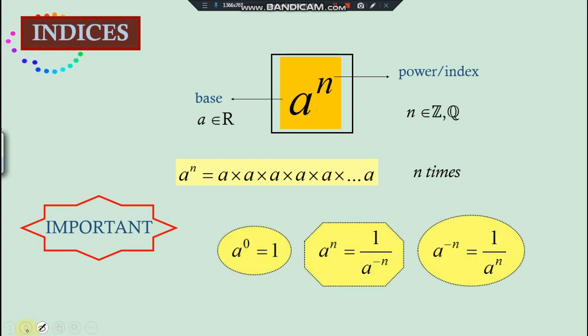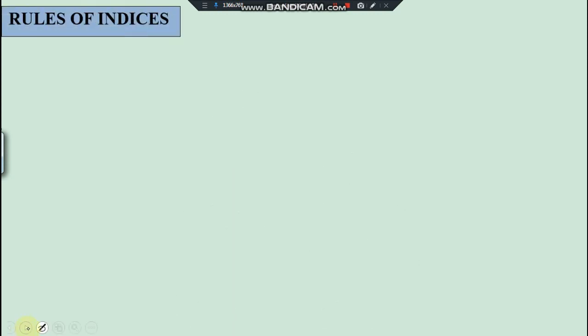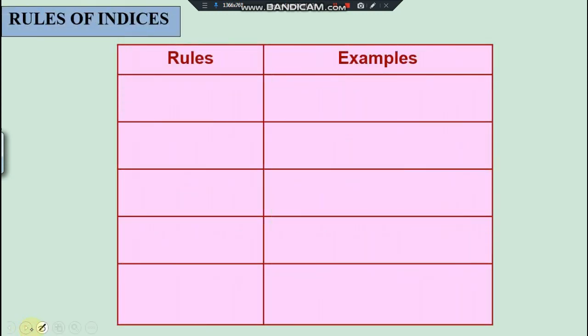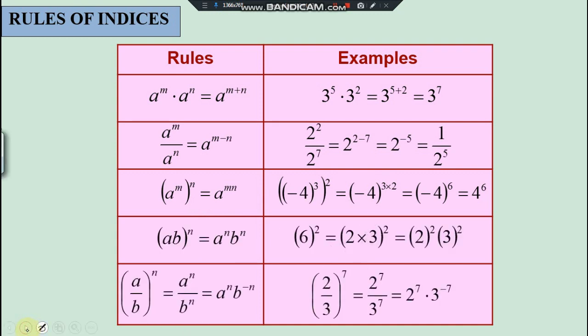So now let's look at what happened here, rules of indices. So rules of indices, there are a lot, but particularly we're having three main rules and regulations, which are the multiplication, the division, and what will happen if you power up an index.